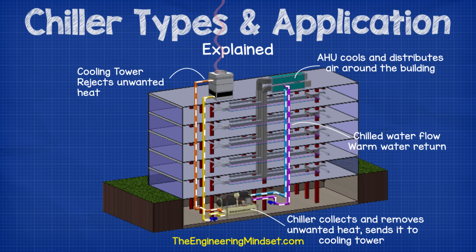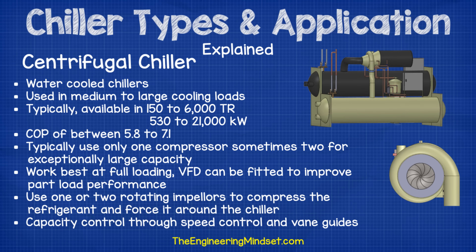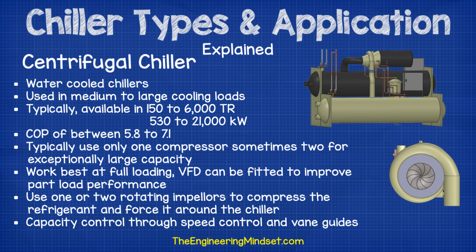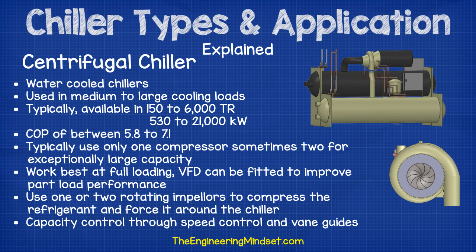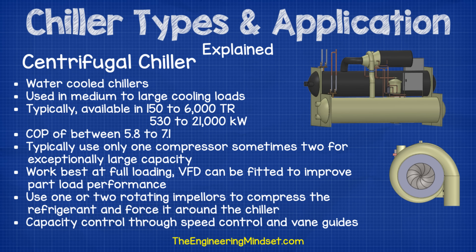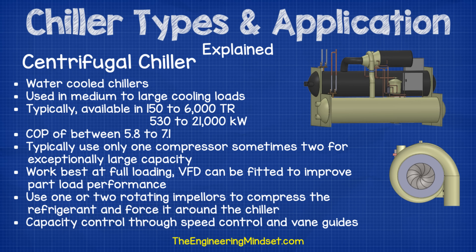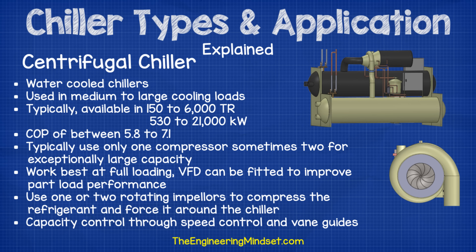Centrifugal chillers are used for water-cooled chillers — it's incredibly rare to come across an air-cooled centrifugal chiller. They're used in medium to large cooling loads, typically available from 150 up to 6,000 tons of refrigeration, or 530 to 21,000 kilowatts. They have a COP of around 5.8 up to 7.1. Typically they'll use only one compressor, sometimes two for exceptionally large capacities. They work best at full loading, although VFDs can be fitted to improve part load performance. They use one or two rotating impellers to compress the refrigerant, and capacity can be controlled through speed control as well as vane guides.